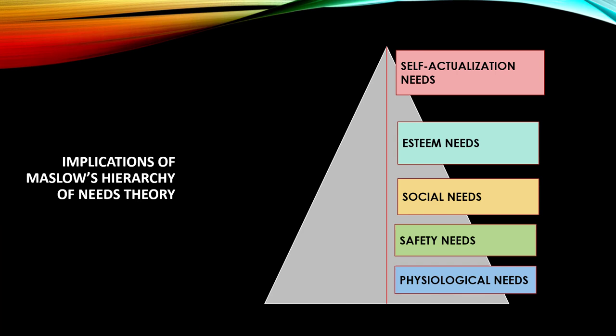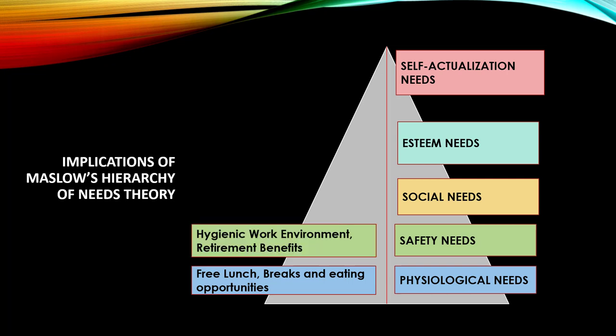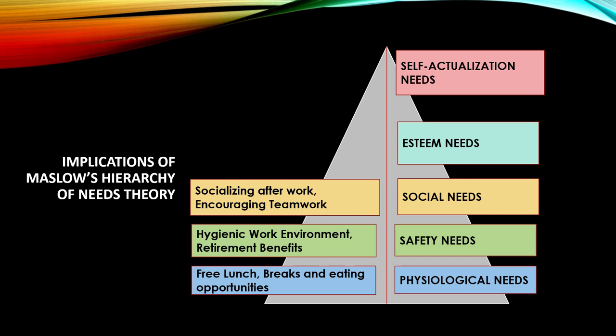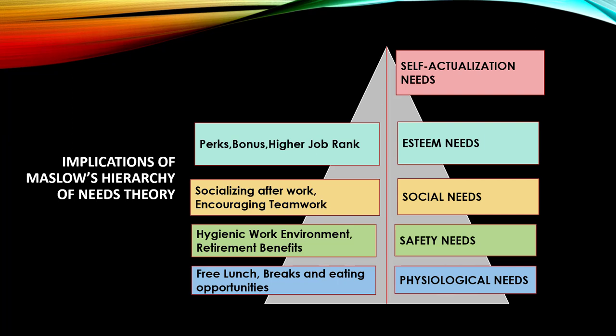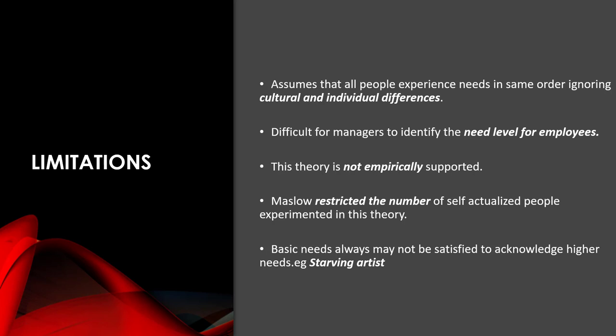Now let's see the implications of Maslow's hierarchy of needs theory. When we talk about physiological needs, a manager can provide free lunches, breaks, and eating opportunities. Safety needs can be addressed through a hygienic work environment and retirement benefits. Social needs can be met by socializing after work and encouraging teamwork. Esteem needs can be satisfied through perks, bonuses, and higher job rank. Self-actualization needs can be satisfied by giving freedom to innovate.